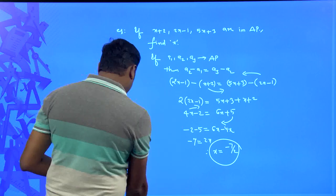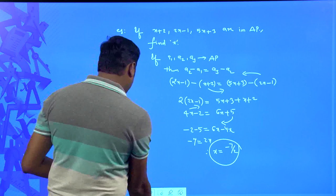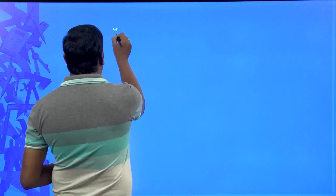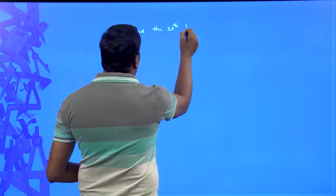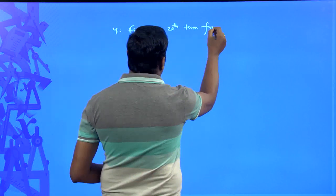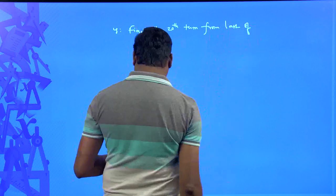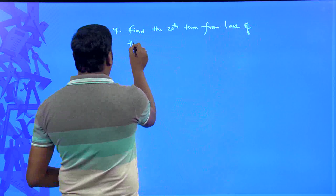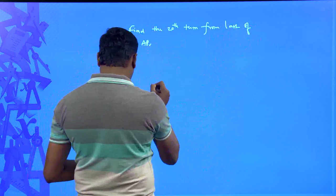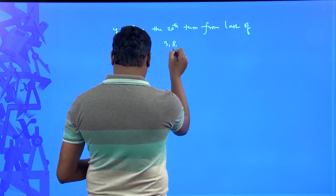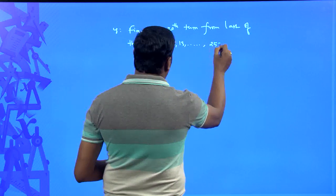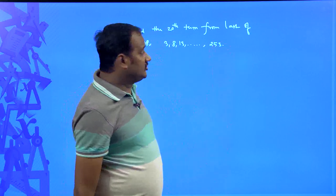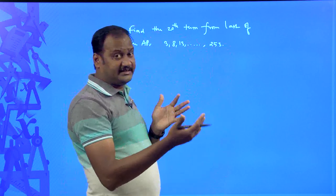Now for a different and interesting type of problem: find the 20th term from the last of the arithmetic progression 3, 8, 13, ..., 253. From the last means we are not counting from the first term but from the last term 253.